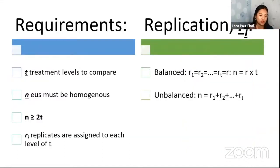And then we have this requirement, so take note of this requirement: treatment levels to compare. So take note we have three or more levels that you want to compare. And then we have N experimental units must be homogeneous, again homogeneous. And then N must be greater than or equal to two times the number of treatment levels. So if you have three treatment levels, so two times three, you have at least six experimental units. And then take note also we have this replicates, or replicates are assigned to each level of T. So for each level there should be a value of R. So for level one you have R1, for level two you have R2, and so on.